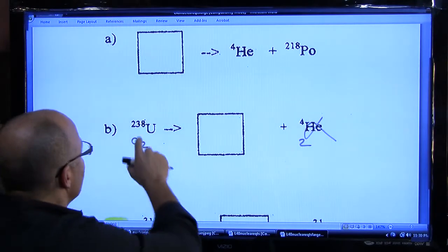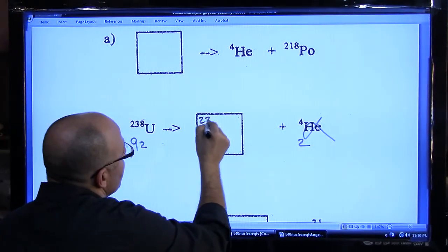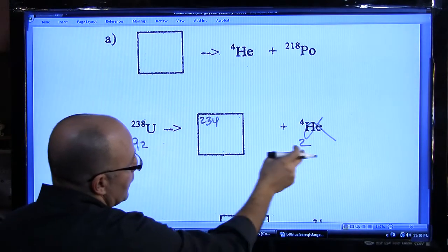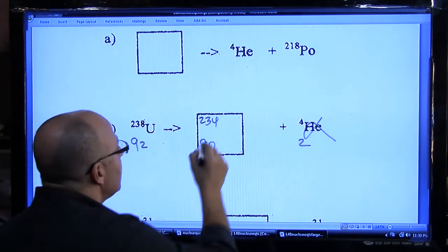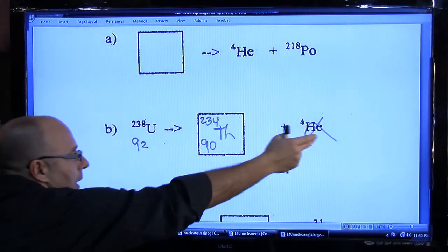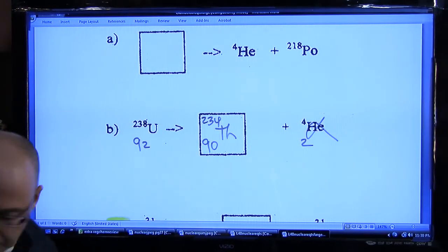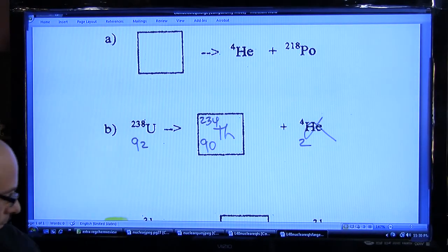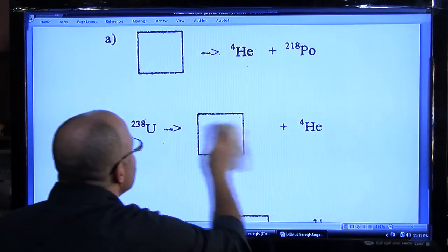So again, you could say 238 minus 4 is 234, 92 minus 2 is 90, and the 90 would be Th, which is thorium. So the uranium, when it emits an alpha particle, transmutates into thorium. Again, pretty easy when you break these down.